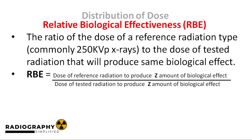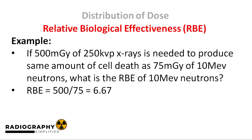A reference dose commonly used is 250 kilovoltage x-rays. For example, if it is discovered through scientific experiments that 500 milligray of 250 kilovoltage x-rays is needed to produce the same amount of cell death as 75 milligray of 10 mega-electron voltage neutrons, going by the RBE formula, the RBE of 10 mega-electron voltage neutrons when tested against our reference radiation of 250 kilovoltage x-rays is 6.67. Based on this, we can say that 10 mega-electron voltage neutrons are 6.67 times more powerful than our reference radiation.